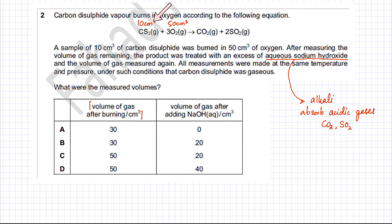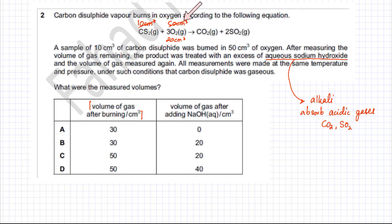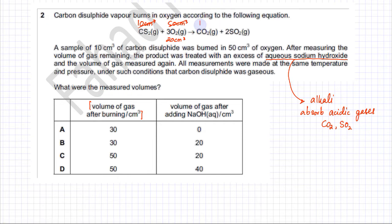That means 10 cm³ of CS₂ is only going to react with 30 cm³ of O₂. Since we added 50 cm³, after 30 cm³ reacts, 20 cm³ of oxygen would still be remaining — that's the excess oxygen. According to the ratio, 1 CS₂ produces 1 CO₂, so 10 cm³ produces 10 cm³ of CO₂. And 1 CS₂ produces 2 SO₂, so 10 cm³ produces 20 cm³ of SO₂.